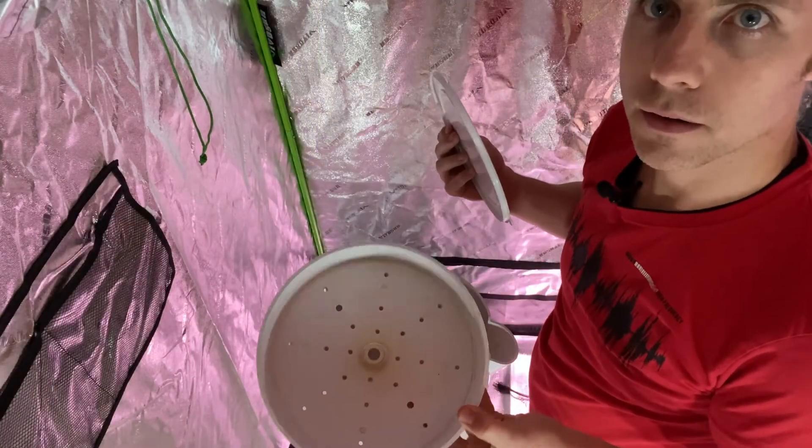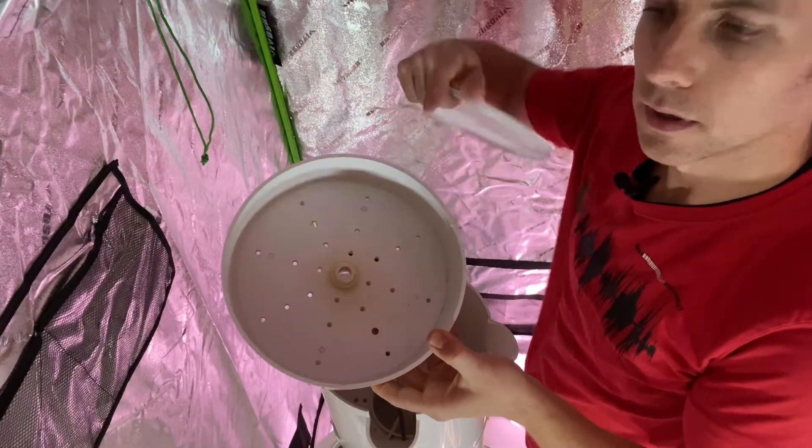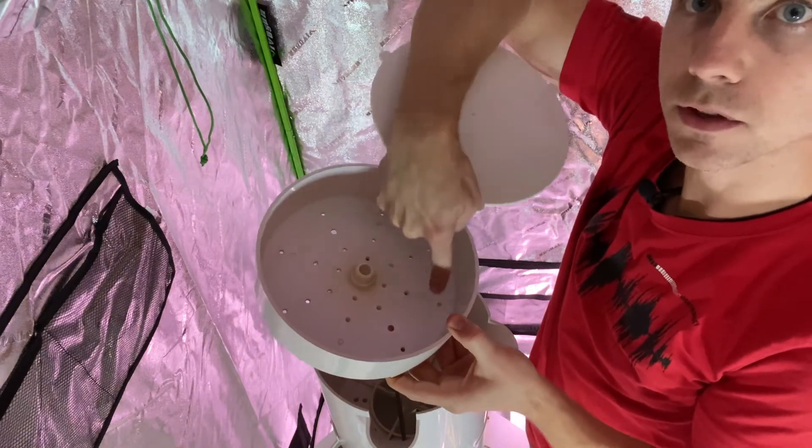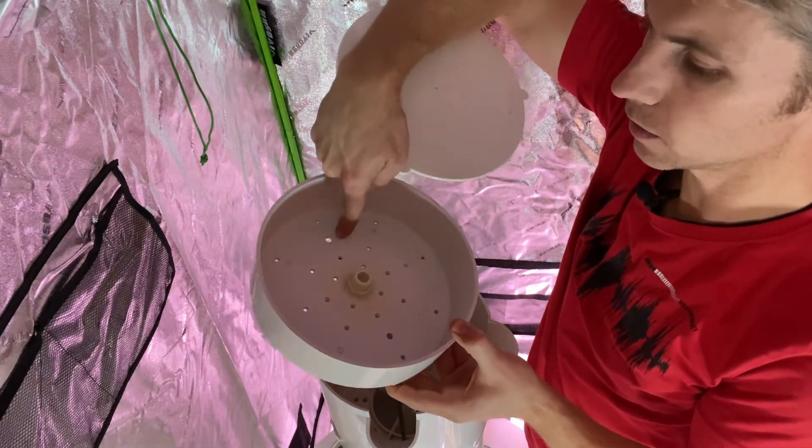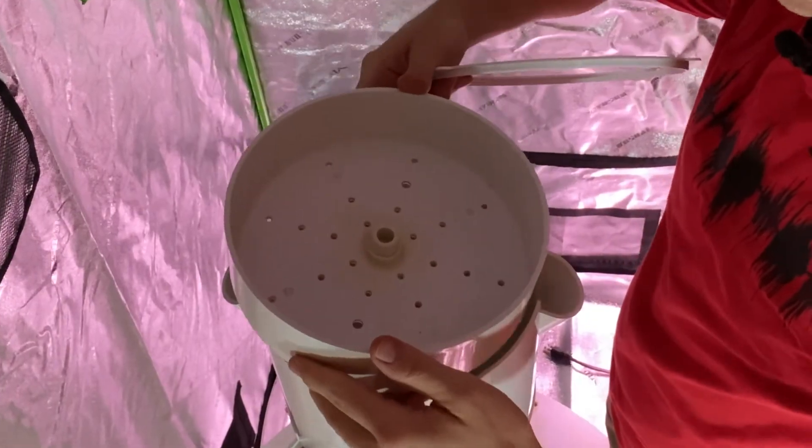So the last part of the tower here is the shower cap. The water comes up through the center and then showers down across the plant roots through these perforated holes here. So I'm just going to line up these last pieces.